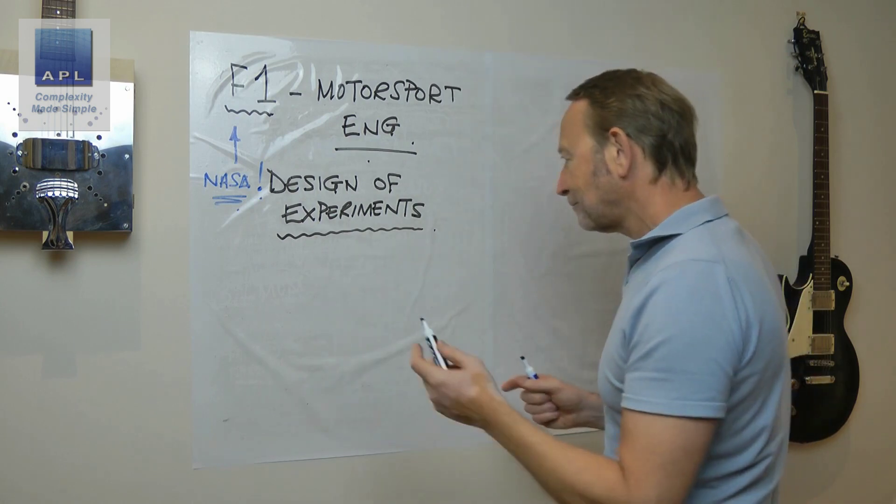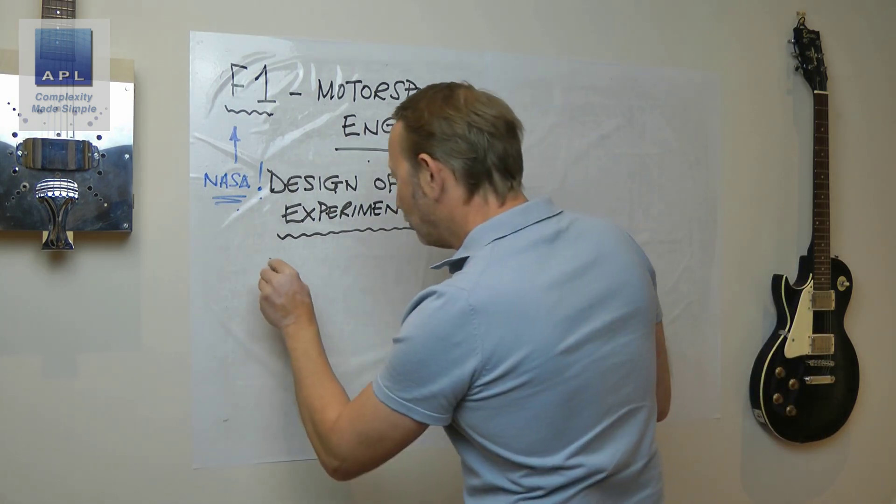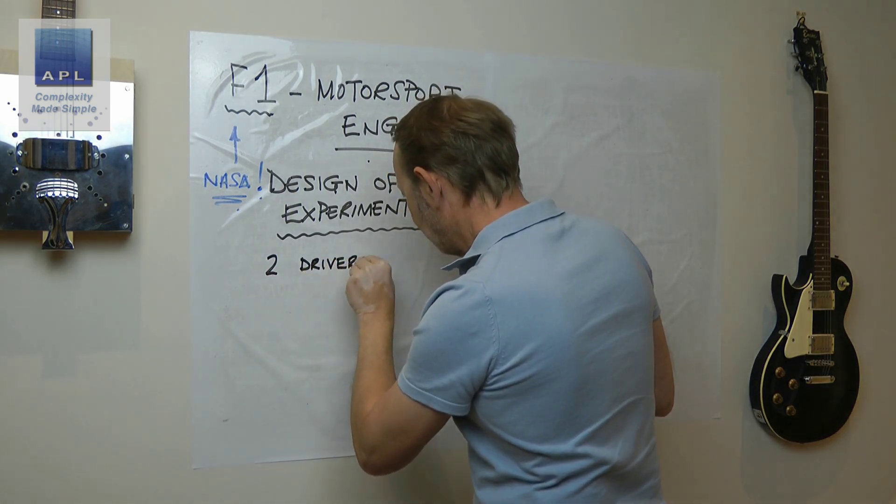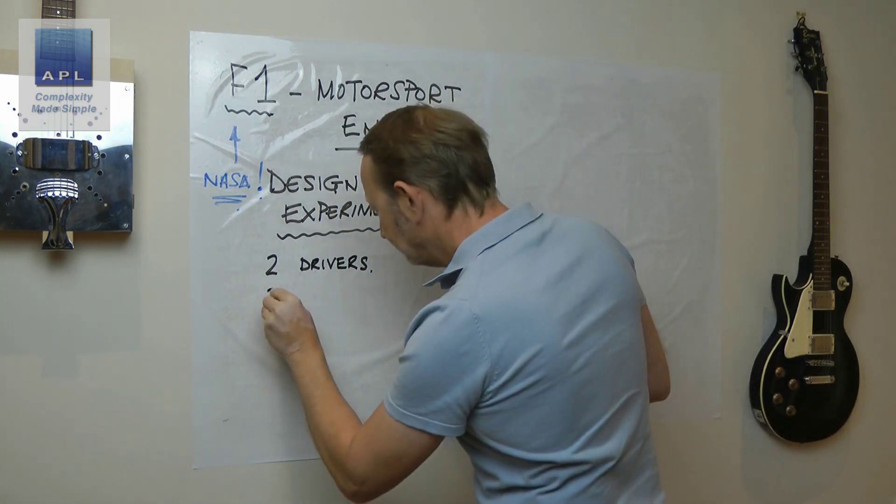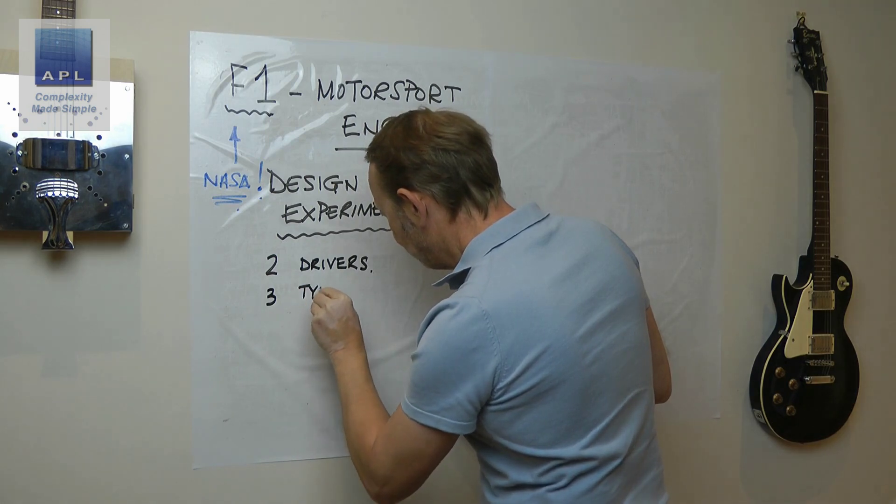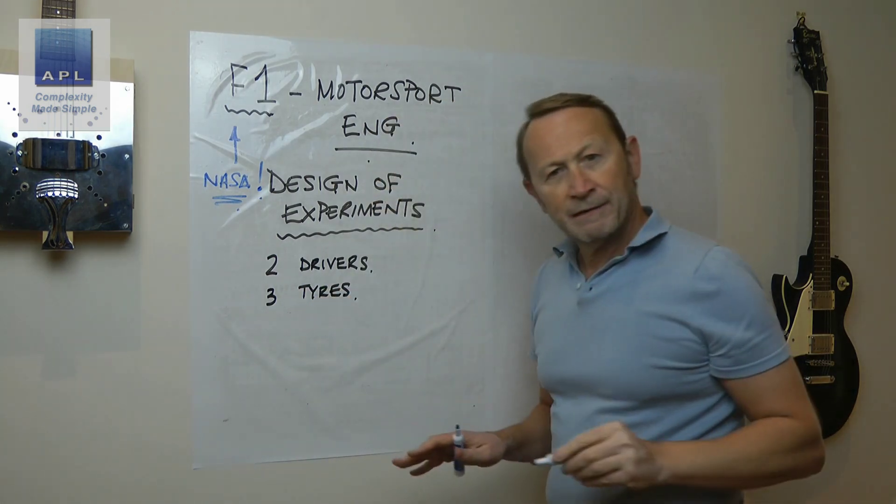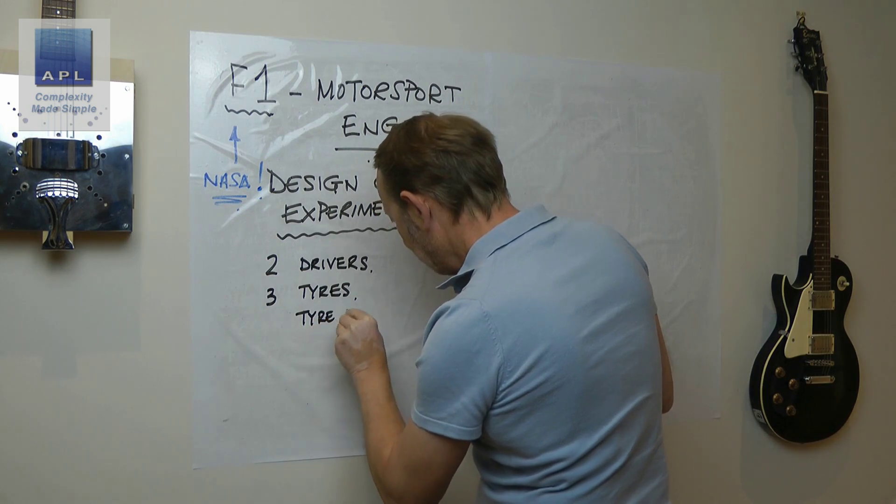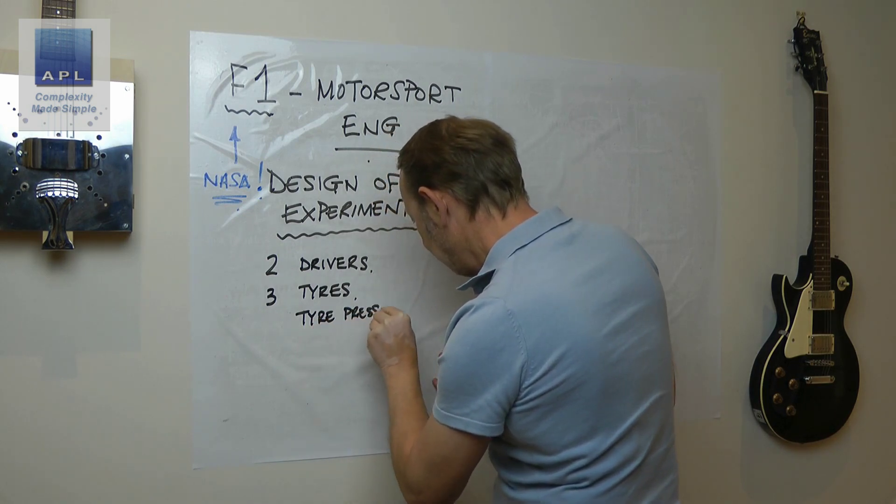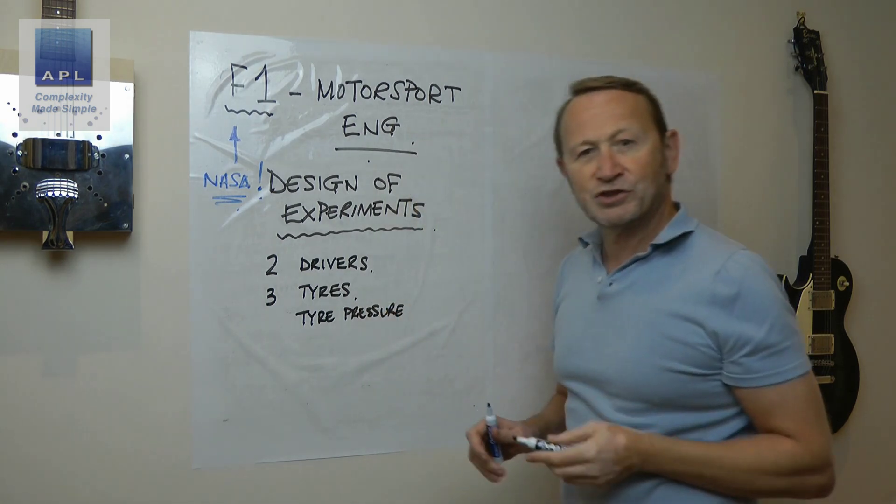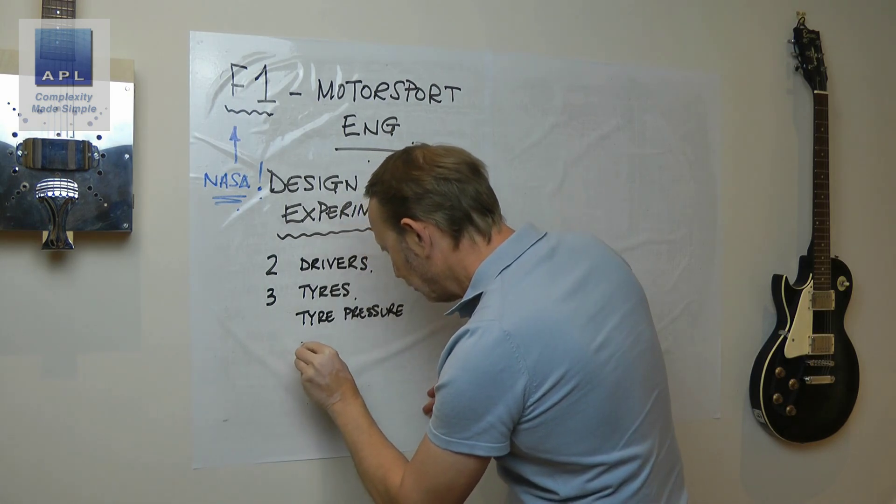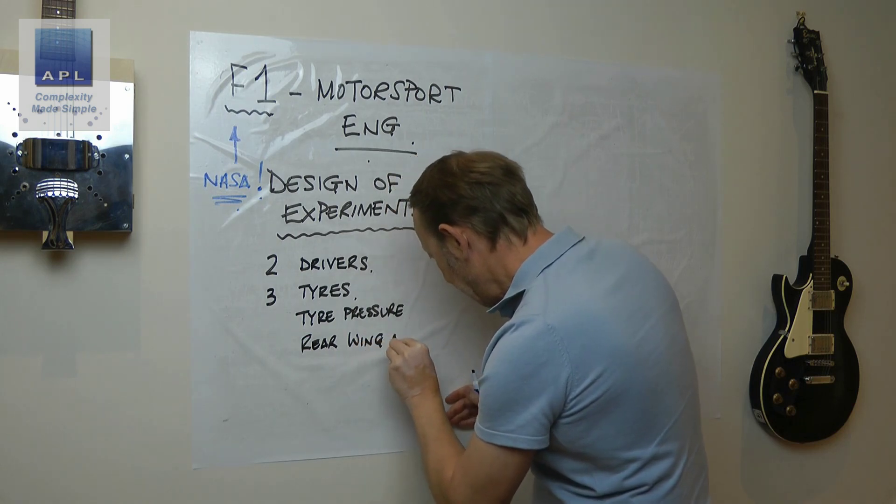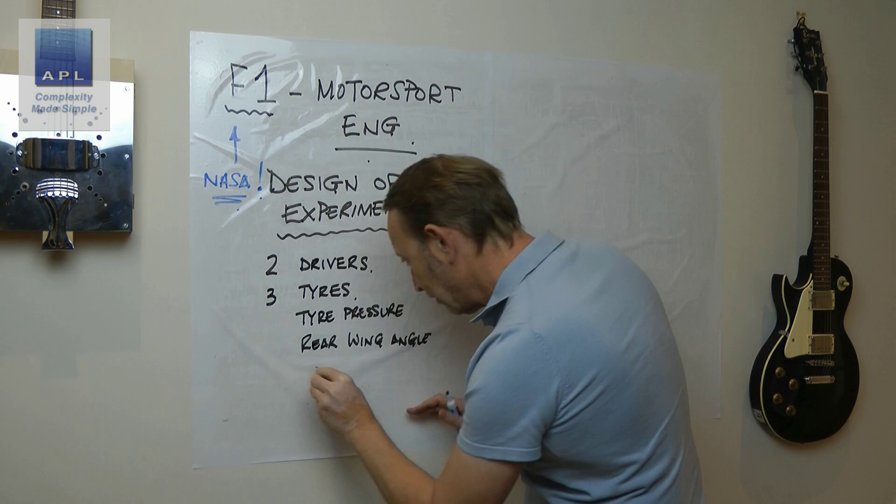Now let's think about the challenge. Let's think about the variables. What have you got? You've often got two drivers, three types of tires, you've often got tire pressure. What else could you have here? If you've got wings on the car, you've got the rear wing angle.